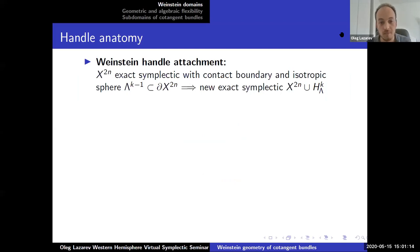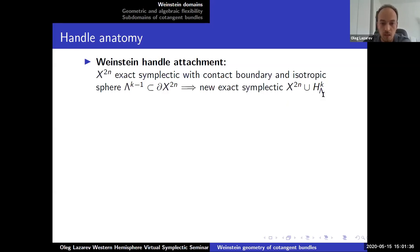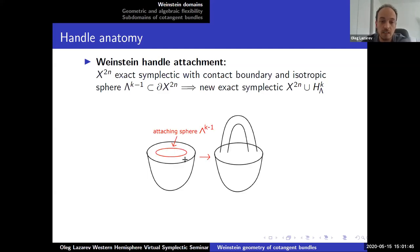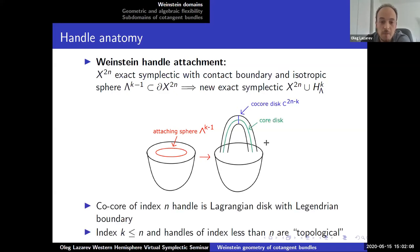The basic idea is that if you have an exact symplectic manifold with contact boundary and you find an isotropic sphere in the boundary with some framing, you can construct a new exact symplectic manifold, which I'll denote by X union H sub lambda. The picture you should have in mind: here I have X, I have lambda and its boundary called the attaching sphere, and this process creates a new manifold — X with this handle. There's the core of the handle, which is an isotropic disc, and the co-core, which is a co-isotropic disc of dimension 2n minus k.